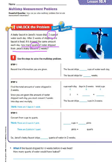So let's begin with step one. Step one says to record the information you are given. So the faucet drips two cups of water each day. The faucet drips for two weeks.